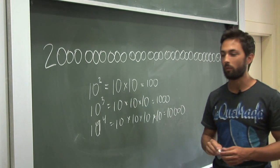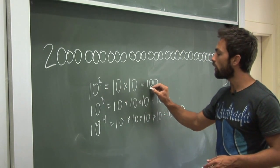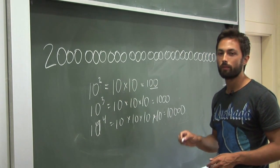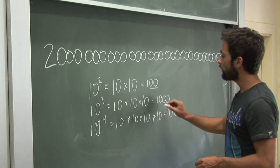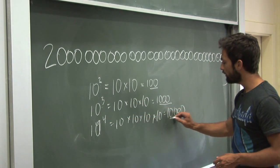So you should notice a pattern developing. When it's 10 to the power of 2, our final answer has a 1 followed by two zeros. When it's 10 to the power of 3, our final answer has a 1 followed by three zeros. 10 to the power of 4, again, four zeros.